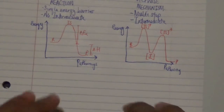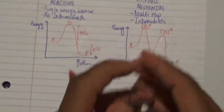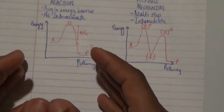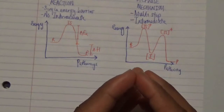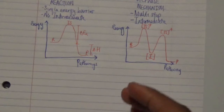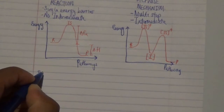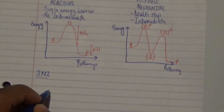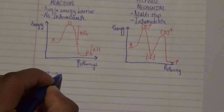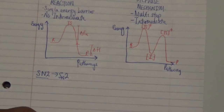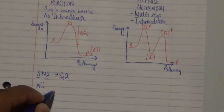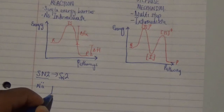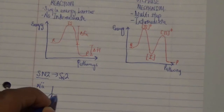Now, what are examples of concerted versus stepwise reactions? One example of a concerted reaction is the SN2 reaction. In an SN2 reaction, we have a nucleophile with lone pairs, a reagent with a stereocenter, and a leaving group attached.